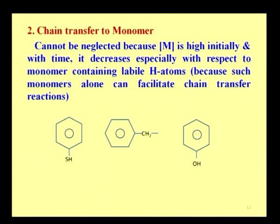The second is chain transfer to the monomer. Chain transfer to the monomer cannot be neglected because monomer concentration is very high initially, even though it decreases over time — especially with respect to monomers that contain labile hydrogen atoms. Those monomers which contain labile hydrogen atoms can facilitate the chain transfer reaction in the system. Examples of such monomers include those with SH, CH2, or OH substitution, which contain more labile hydrogen atoms and are subjected to chain transfer actions very easily.